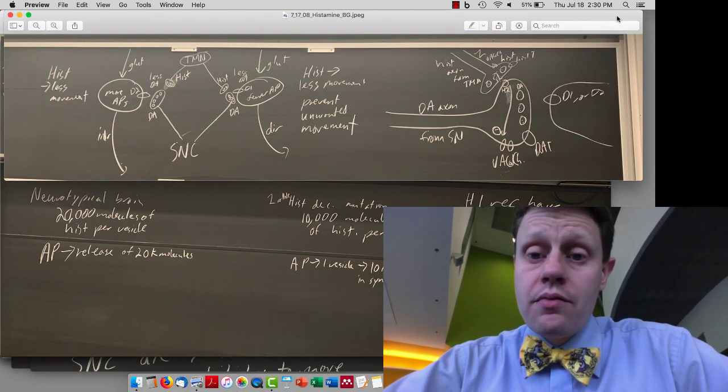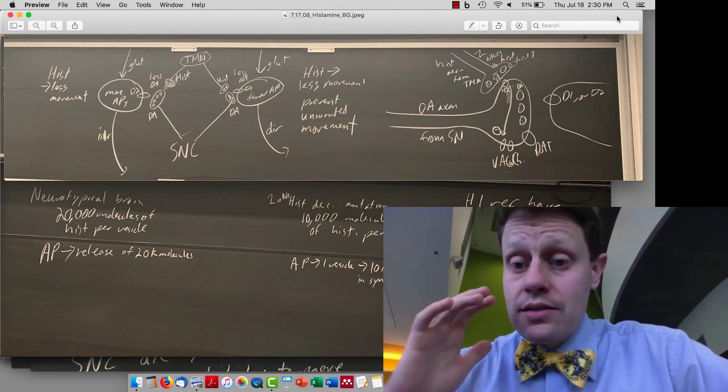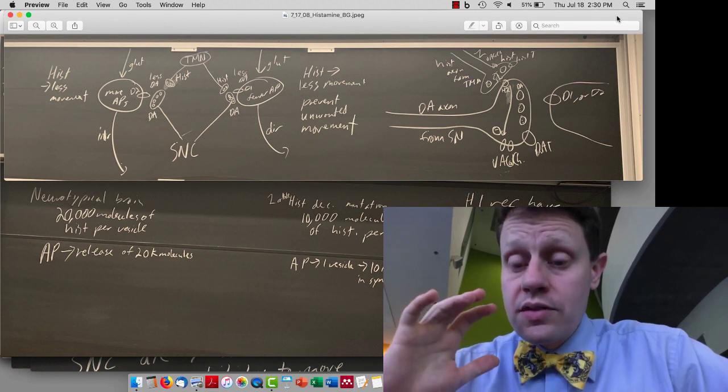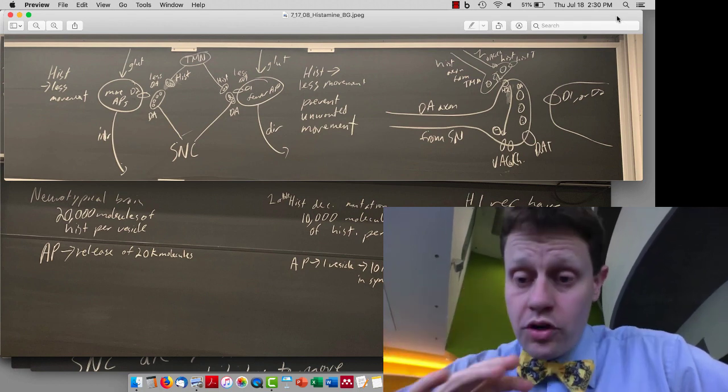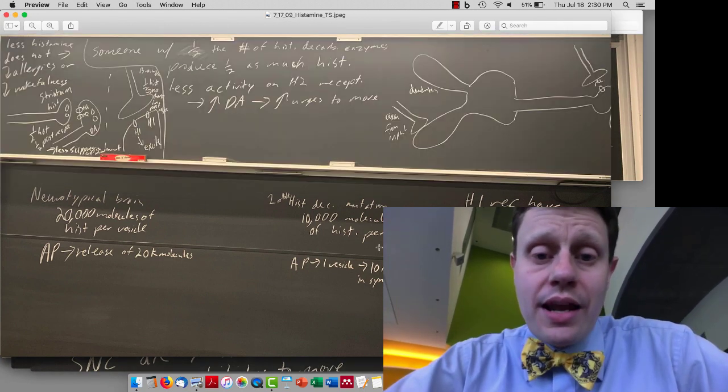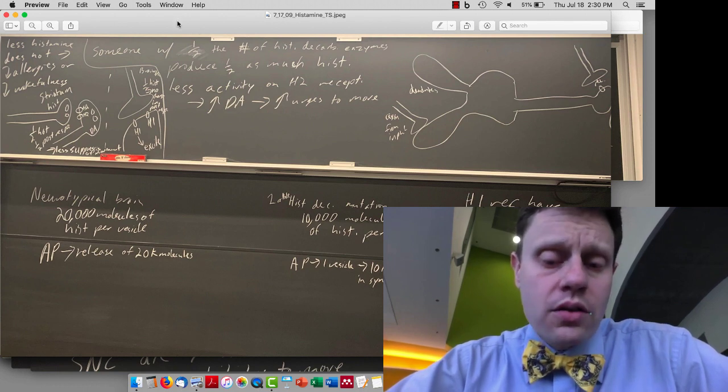Now, in brains where there's less histamine, that means there's less suppression of dopamine, so more dopamine increases urges to move. That's the first level of understanding of this. But then that actually raises a question about what is going on.